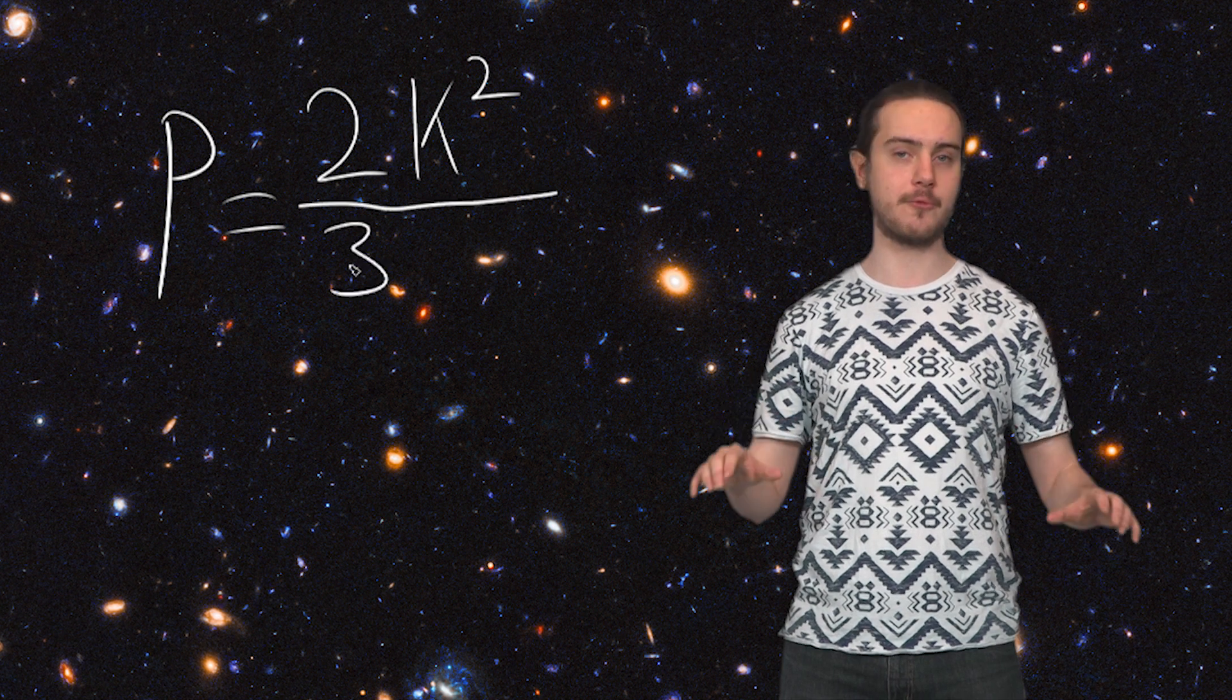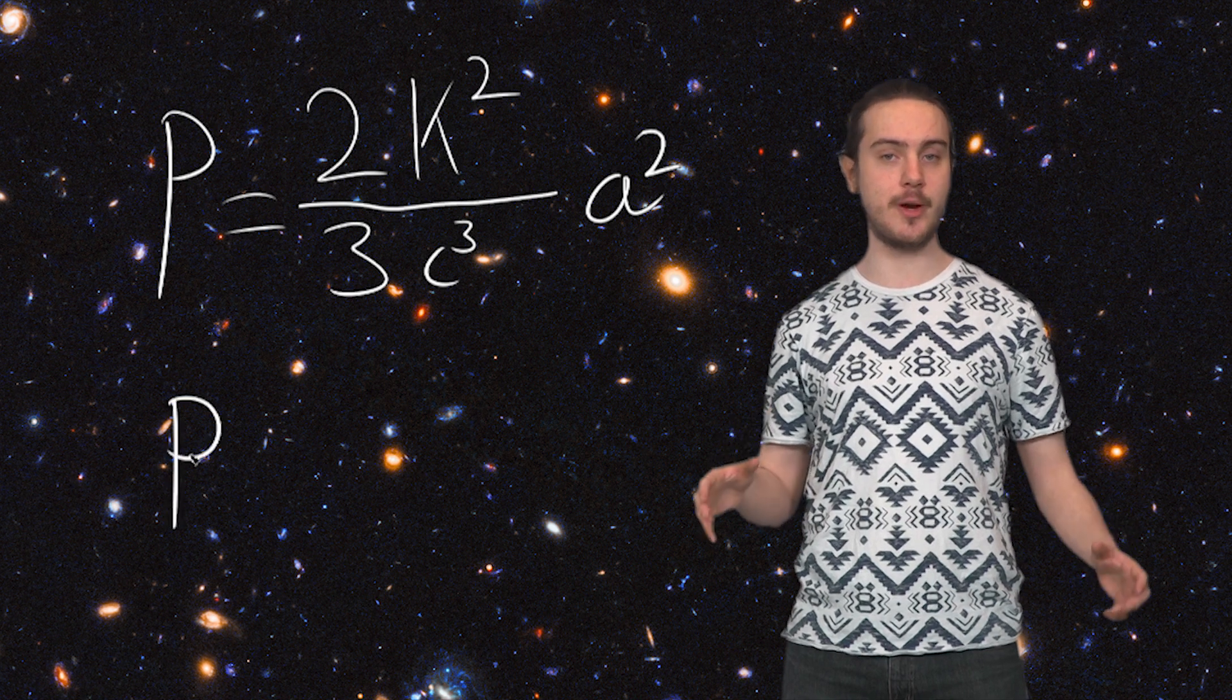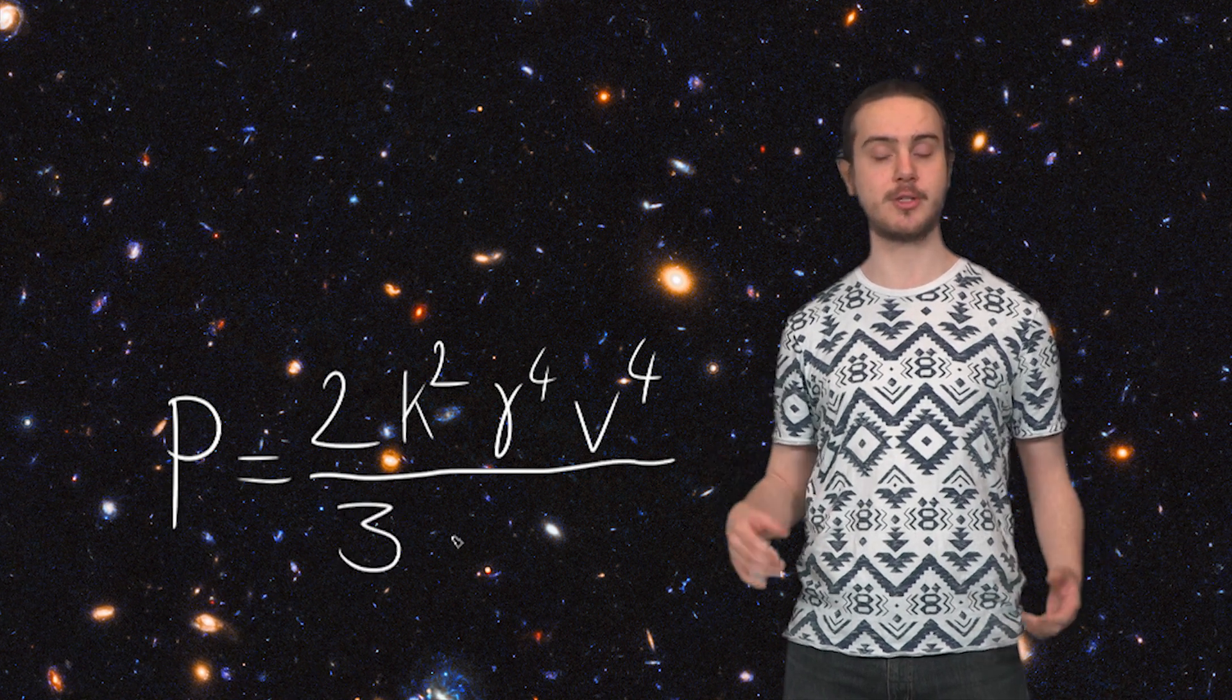The power of this radiation can be derived through Larmor's formula. By applying the Lorentz transformations to the acceleration component and rewriting it for the cyclical motion of the particles, you get an equation which looks something like this.